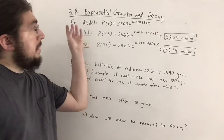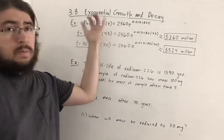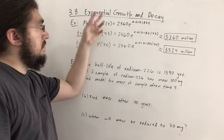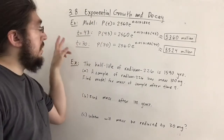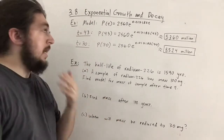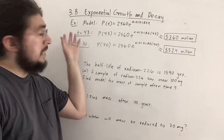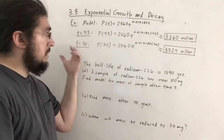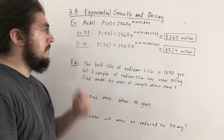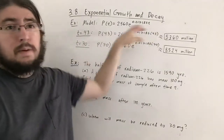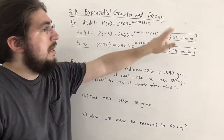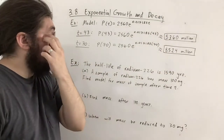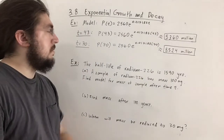Using this model, we evaluate P(t) at t = 43 and t = 70, representing estimates for 1993 and predictions for 2020. Plugging in and approximating with the calculator, we get approximately 5,360 million and 8,524 million for those years respectively.